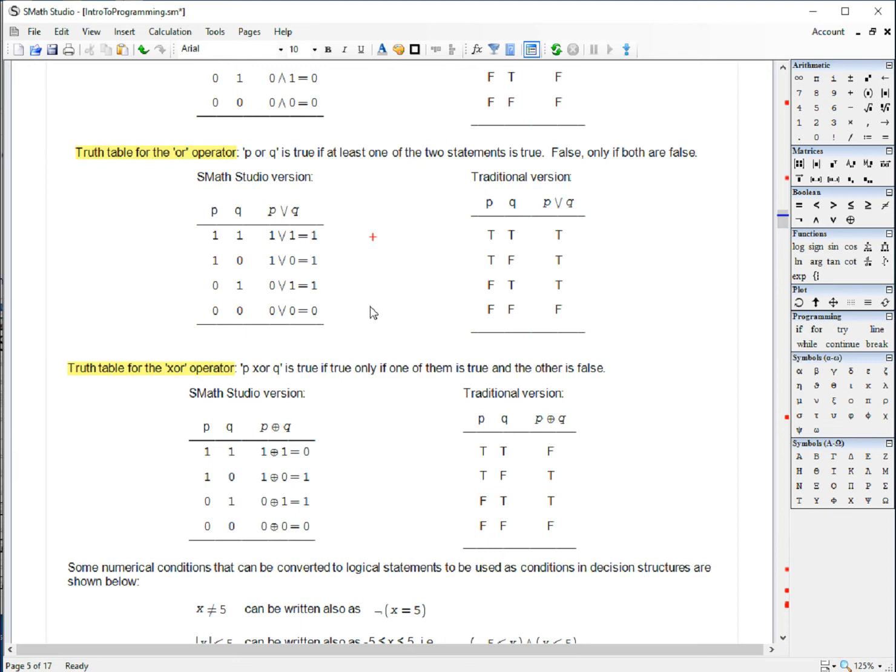Finally, we have the exclusive OR operator. This is not as common as the other two, but basically what that means is that one of them has to be true and the other false in order for the statement to be true. So, you're excluding one of the statements. So, when you have two truths or two falses, you get false outcomes.